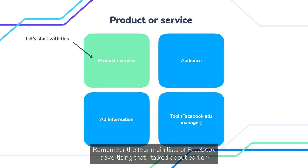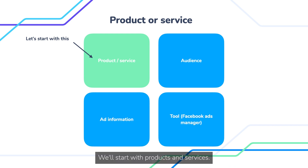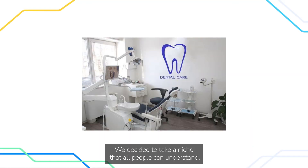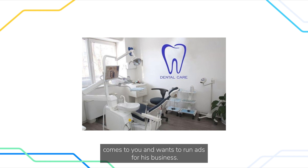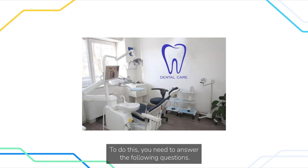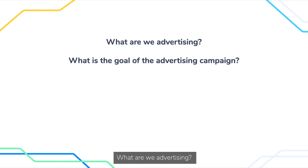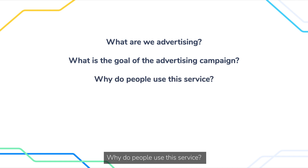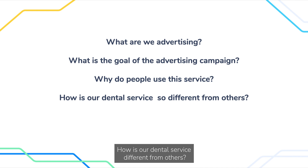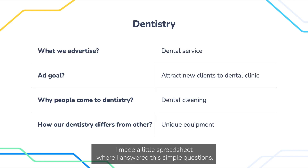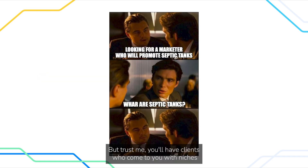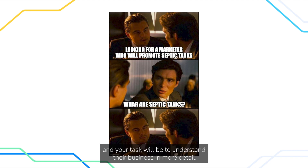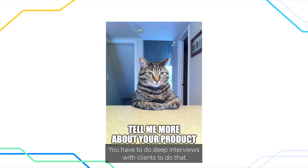Remember the four main legs of Facebook advertising that I talked about earlier — we'll start with products and services. We decided to take a niche that all people can understand: dentistry. Imagine that the owner of a small dental clinic comes to you and wants to run ads for his business. To do this, you need to answer the following questions: What are we advertising? What is the goal of the advertising campaign? Why do people use this service? How does our dental service differ from others? I made a little spreadsheet where I answered these simple questions. We specifically chose dentistry because it's clear to everyone, but you will have clients who come with niches that are not immediately clear, and your task will be to understand their business in more detail.